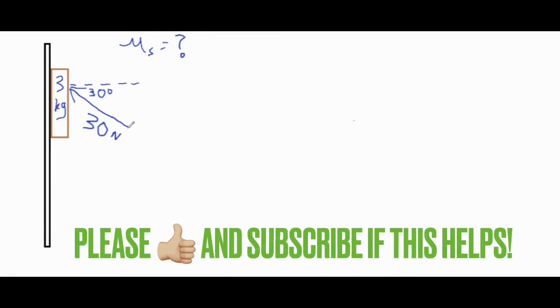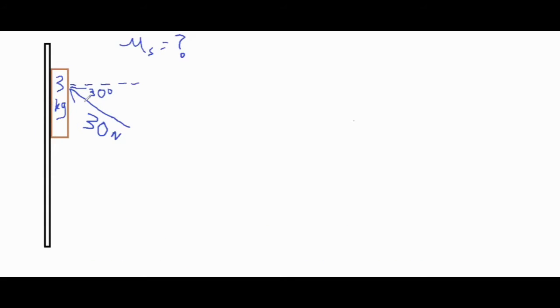In this video we're going to be taking a look at a 30 newton force being applied on a 3 kilogram book at an angle of 30 degrees below the horizontal, and we're going to solve for the minimum value for the coefficient of static friction that keeps it from sliding.